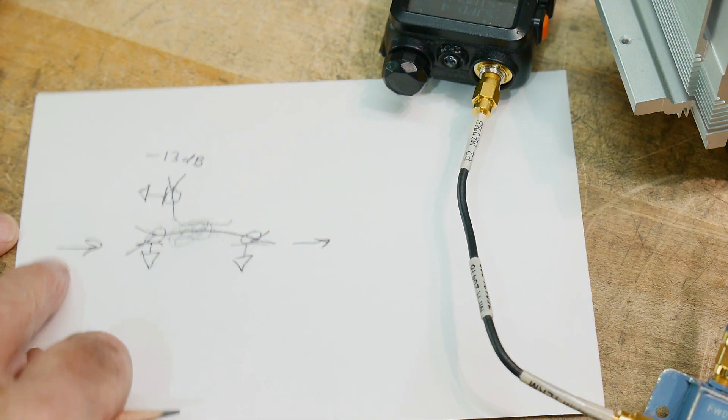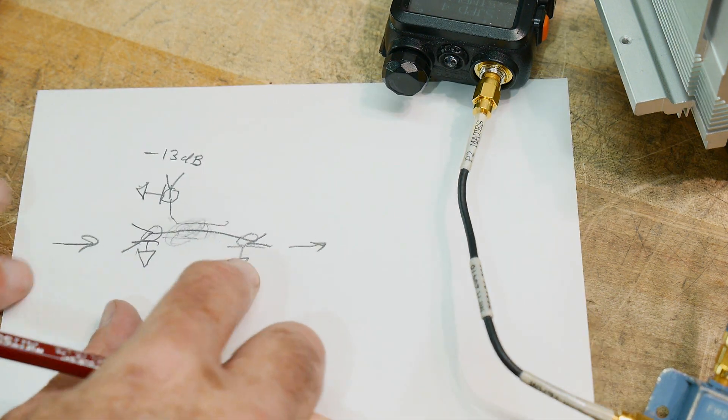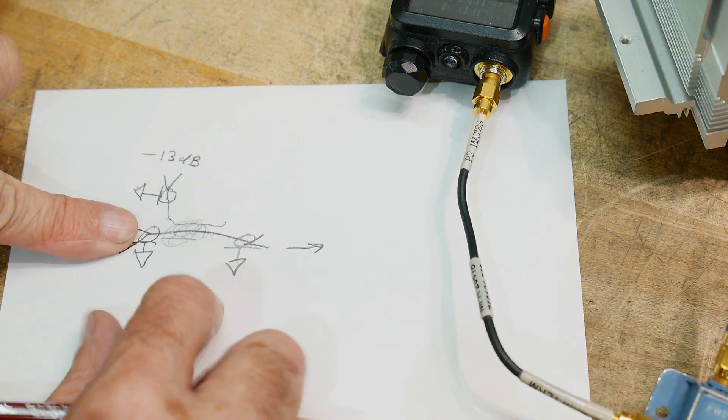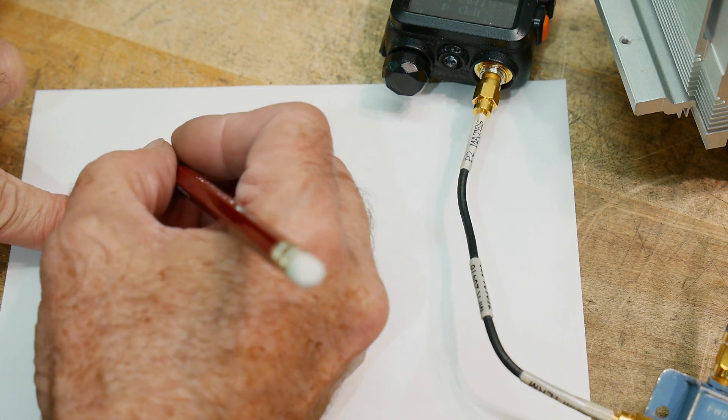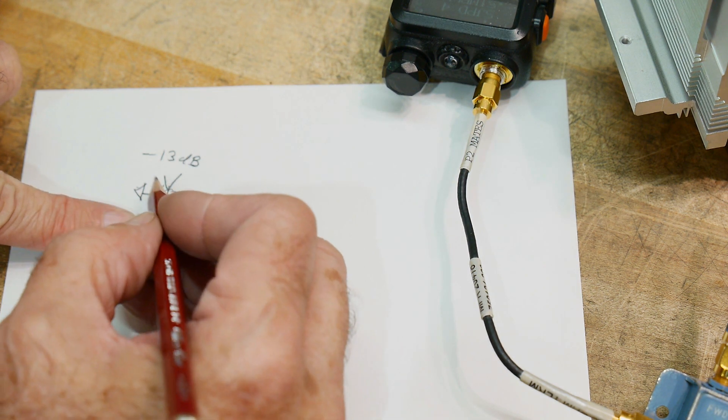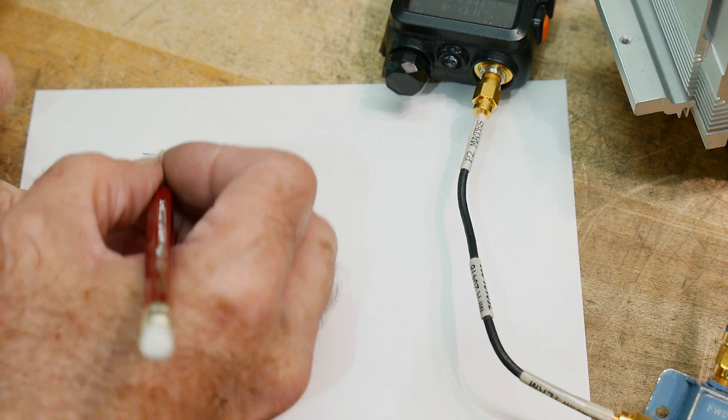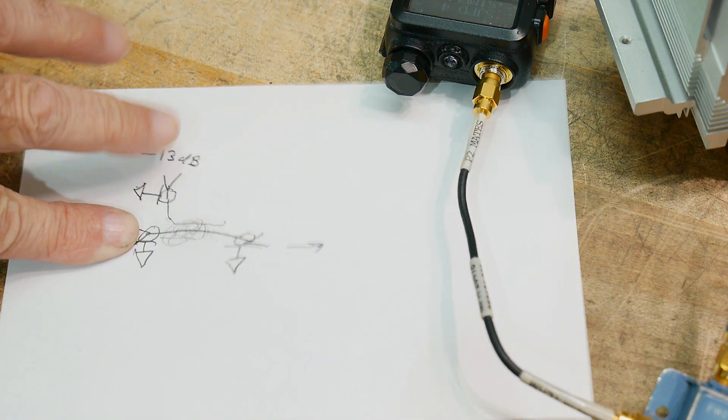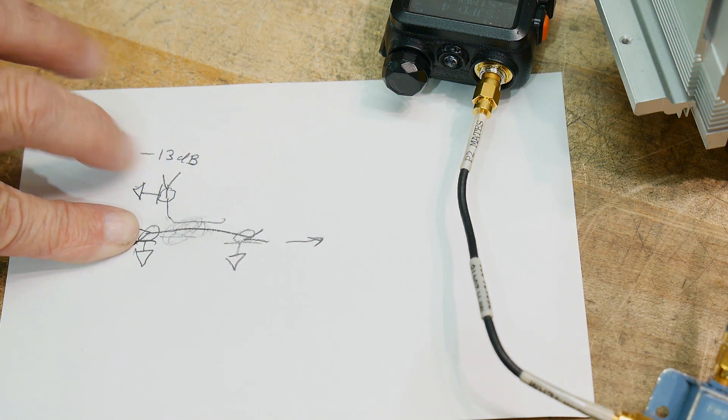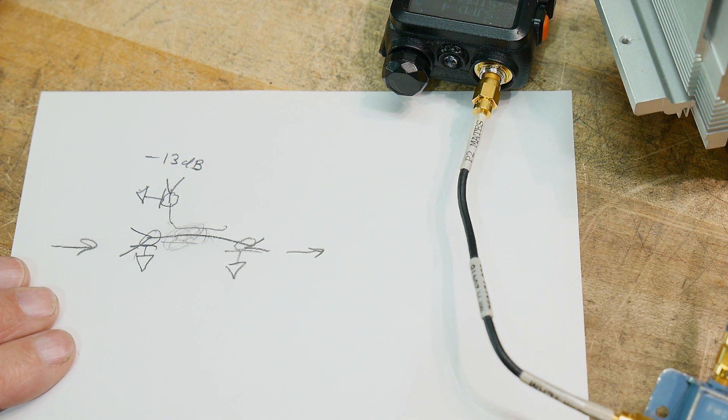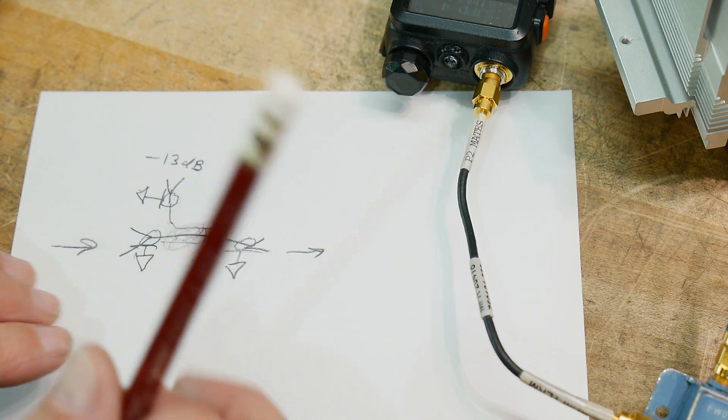So if you put in 20 dB of signal, then it'll get attenuated on this connector by 13 dB. So 7 dB will be left over, and 7 dB will snake out of this one here. It's a 13 dB coupling. That's what we're going to do.